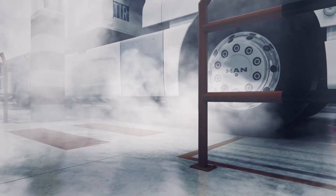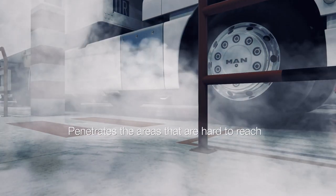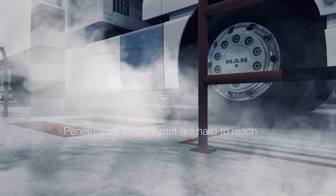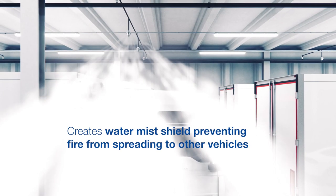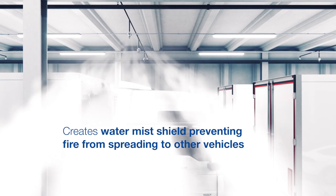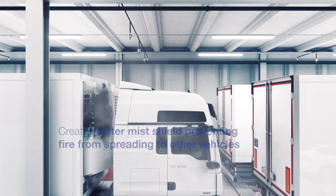Water mist discharged at high pressure effectively penetrates areas that are hard to reach with low-pressure sprinkler systems, for example under cars. High Fog not only efficiently cools the heat, but also creates a water mist shield that prevents fire from spreading to other vehicles.